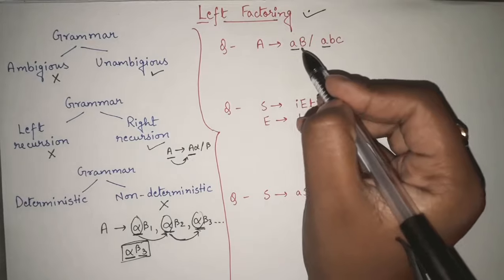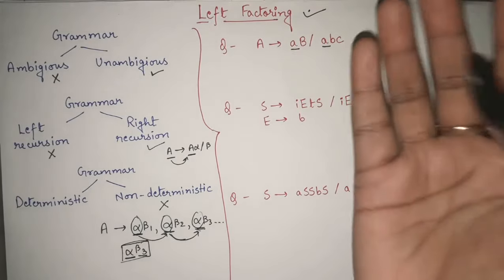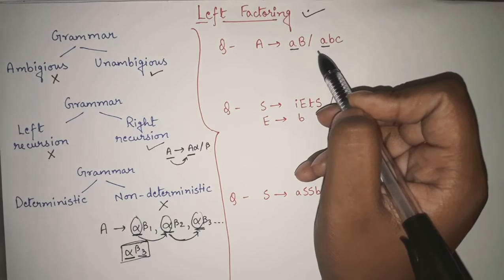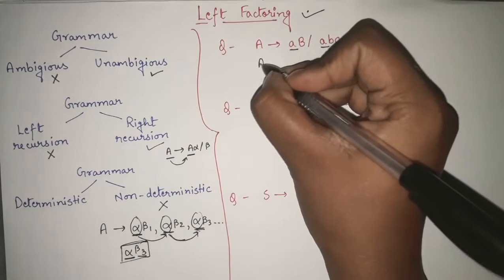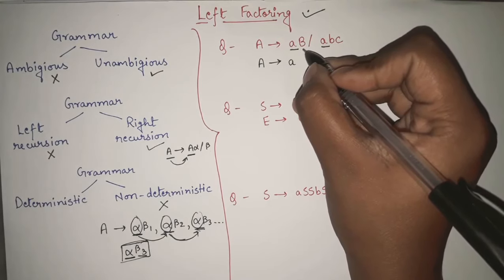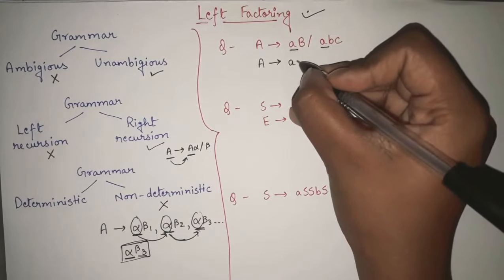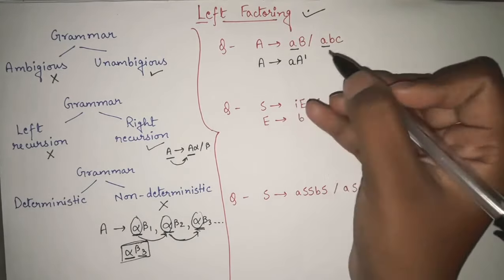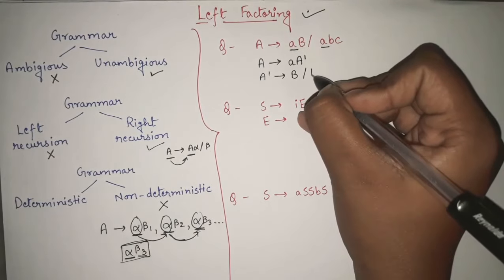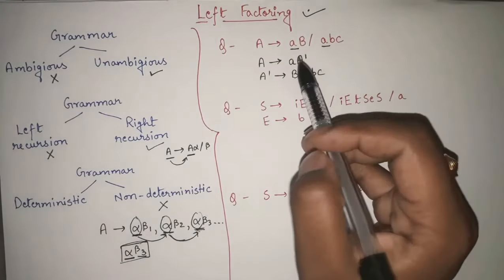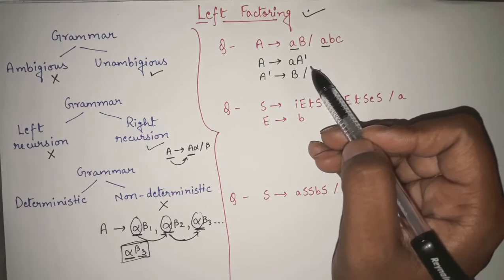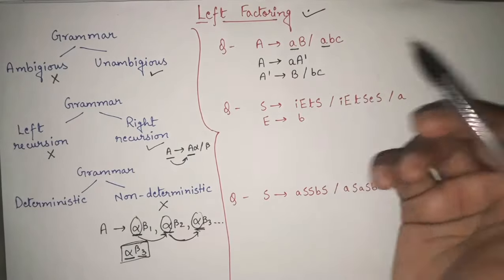How is left factoring done? Whenever we have the same prefix, we take that prefix as common. Here, what is the common prefix? Small 'a'. So we take 'a' as common: A → aA′. Then we introduce a new variable A′. For A′, whatever is remaining — capital B in one production and BC in the other — we write: A′ → B | BC. It is that easy. Whatever common prefix exists, take it as common and introduce another variable. In that variable, write whatever is left after the common prefix.